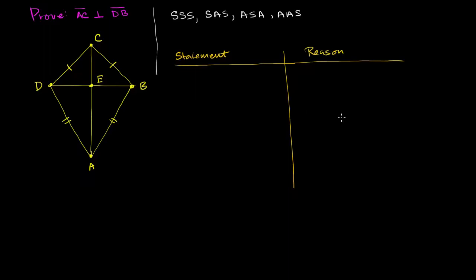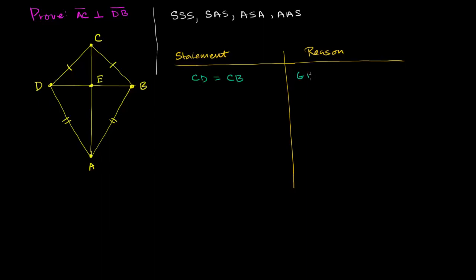The strategy I'm going to use: right off the bat, it seems I can prove that triangle CDA is congruent to triangle CBA based on side-side-side. That's a good starting point because once I establish congruency, I can say angles are the same. So our first statement: the length of segment CD equals the length of CB. That is given.